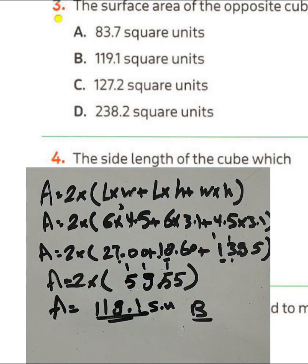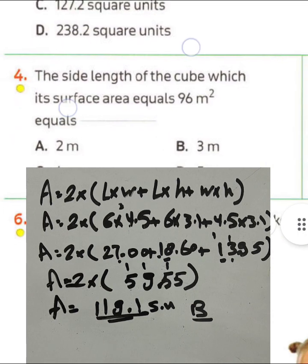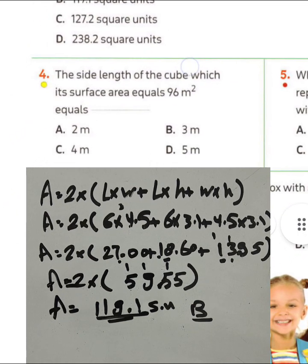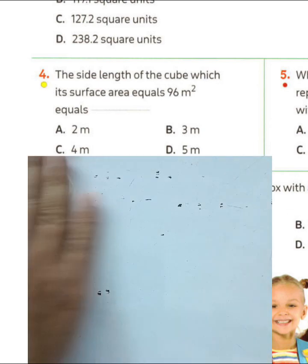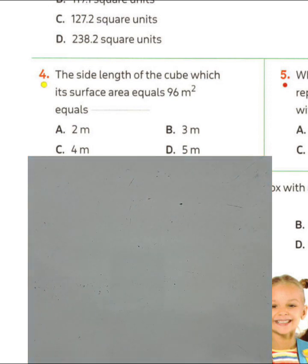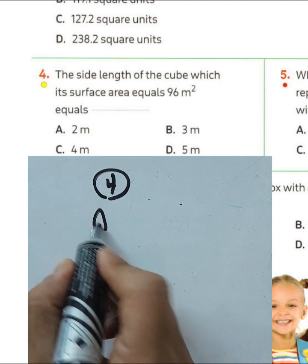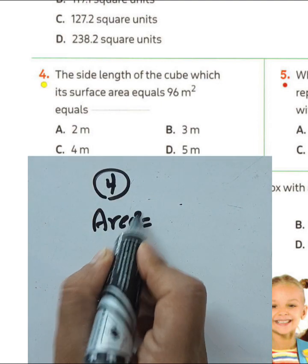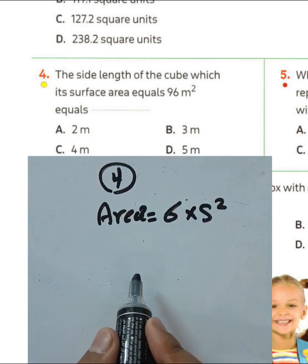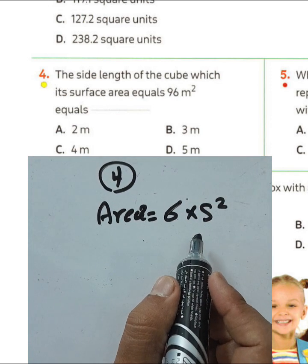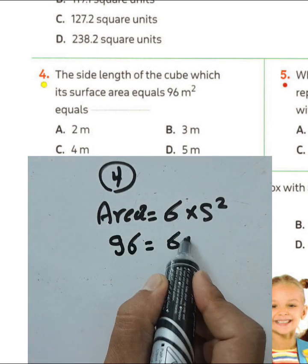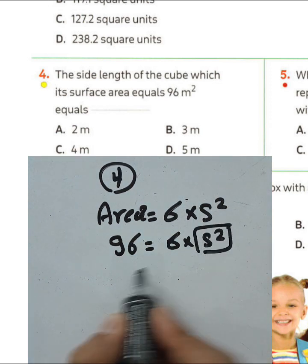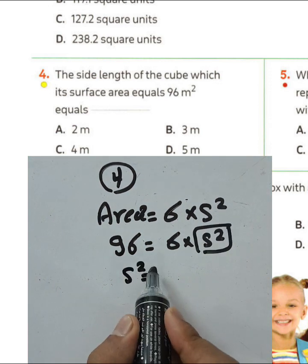Question number four: the side length of a cube whose surface area is 96 square meters is? We want to find the side of the cube. We know all sides in a cube are equal, so we write the rule: surface area equals 6 times s². Given surface area is 96, so 96 equals 6s².